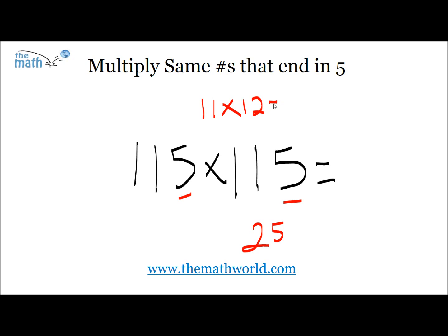If you need a fast trick on how to multiply 11, there is another video for that — make sure you watch that. But 11 times 12 is 132. So we write 132, and 115 squared is 13,225. And this is a nice little trick.